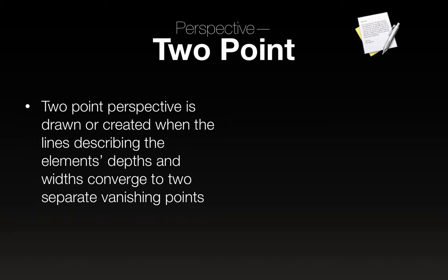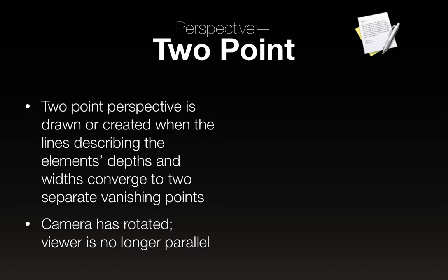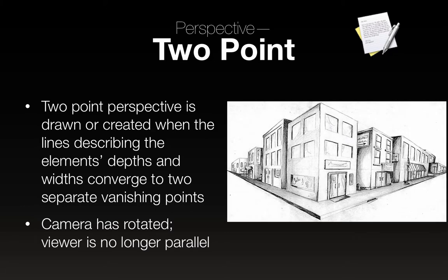Two-point perspective is created when the lines describing elements' depths and widths converge to two separate vanishing points. Basically, the camera has rotated — the viewer is no longer parallel. One side of the building converges to the vanishing point on the left (the depth lines), and the other side converges to a vanishing point on the right (the width lines), just slightly off the edge of the image. The camera has rotated, so the viewer is no longer parallel.